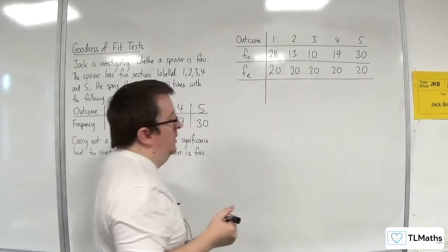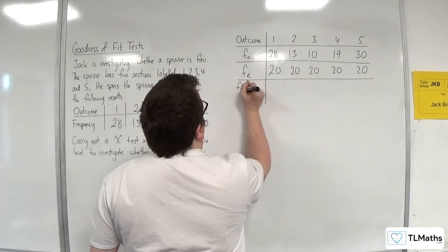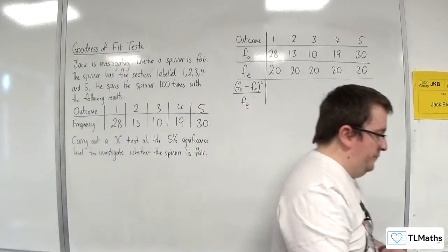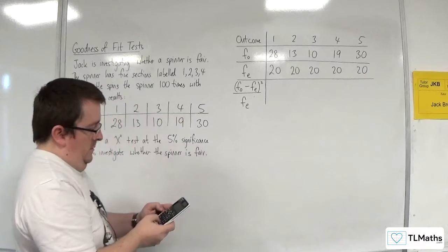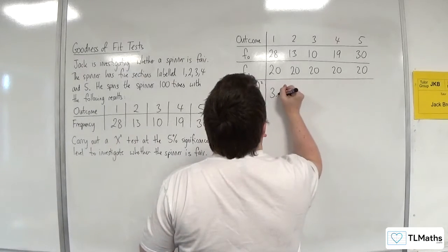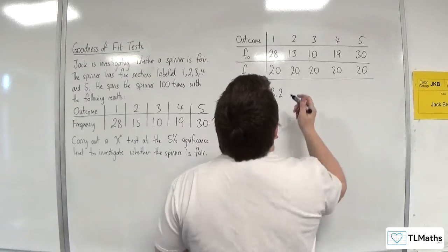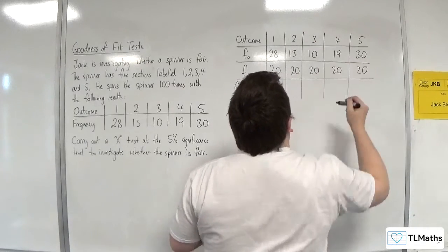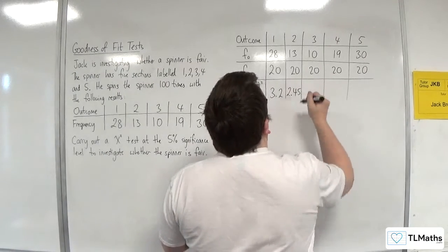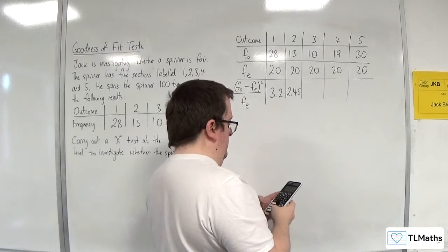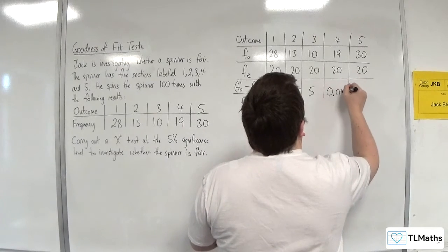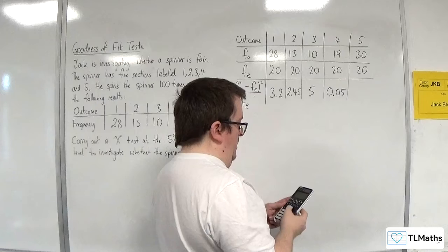Then we need to do FO take away FE squared over FE. So 28 take away 20 squared over 20, and we get 3.2. For 13, we get 2.45. For 10, we get 5. For 19, we get 0.05. And for 30, we get 5.